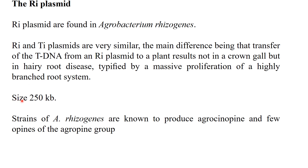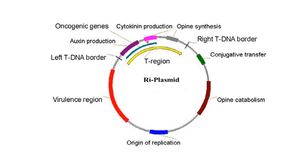The size of the Ri plasmid is 250 KB. Strains of Agrobacterium rhizogenes are known to produce agropines and agrosino-pines. Agropines are the opines produced by the Ri plasmid. The structure of the Ri plasmid includes right and left T-DNA borders, auxin production, cytokinin production, opine synthesis, oncogenes responsible for hairy root disease, virulence genes for T-DNA transfer, origin of replication, opine catabolism genes, and conjugative transfer genes.